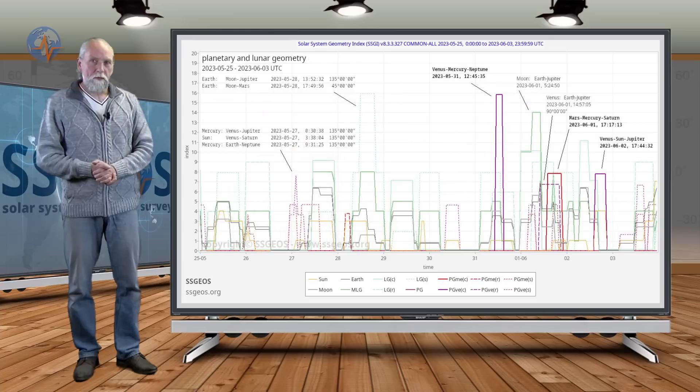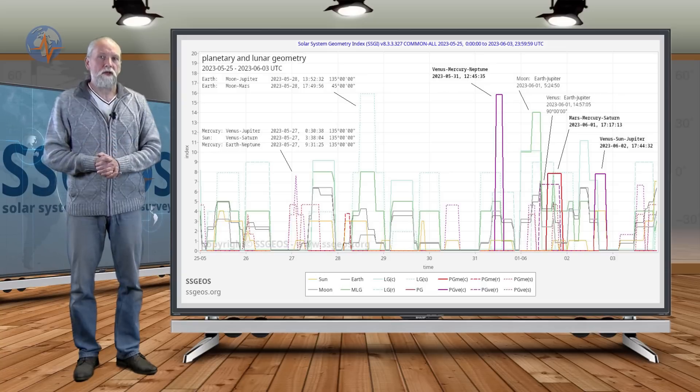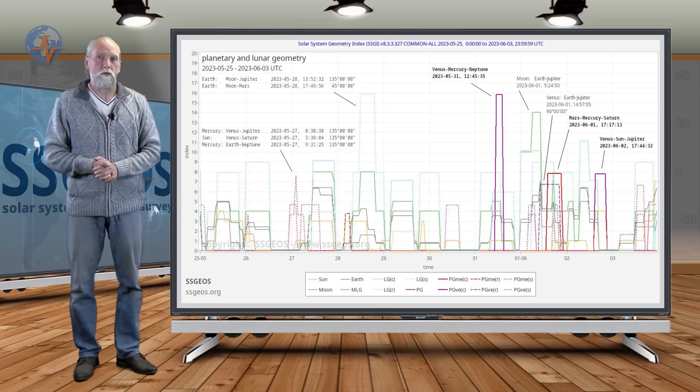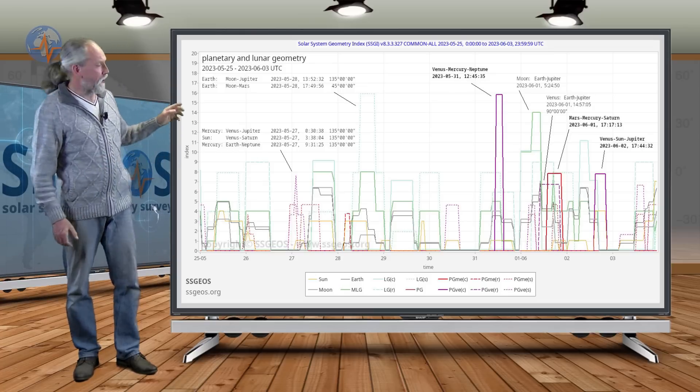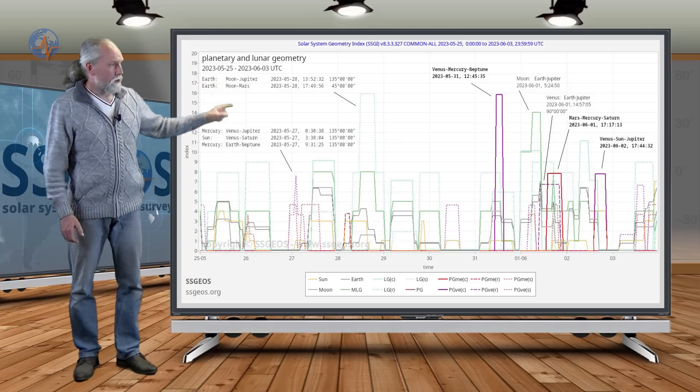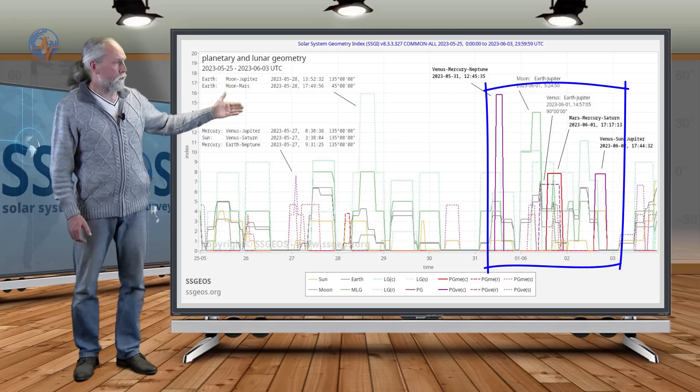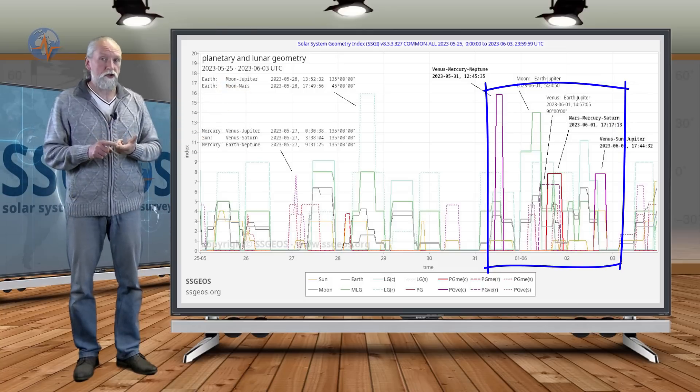Okay so what to expect in the coming days? We had really clustering of critical planetary geometry starting on the 10th of May and it isn't over yet. If we look at the SGI graph we see again planetary conjunctions coming up on the 31st, on June 1st and June 2nd. That is three critical planetary conjunctions in three days.